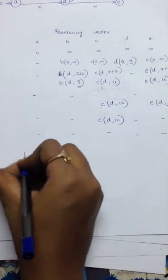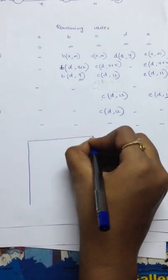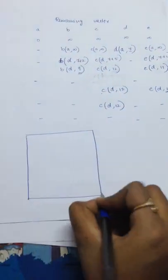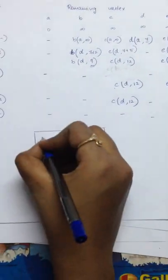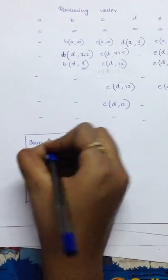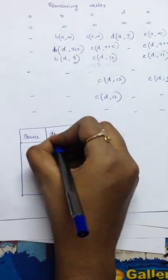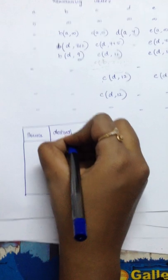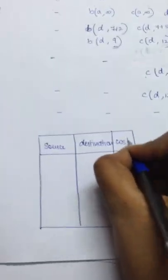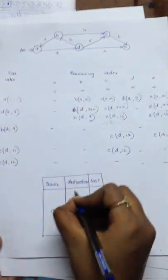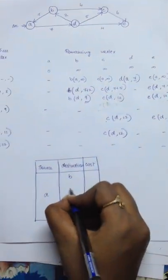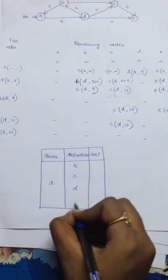Now, to frame the table. The table can be framed by using three columns. Source, destination and cost. Our source node is A. From A we must access B, C, D and E.